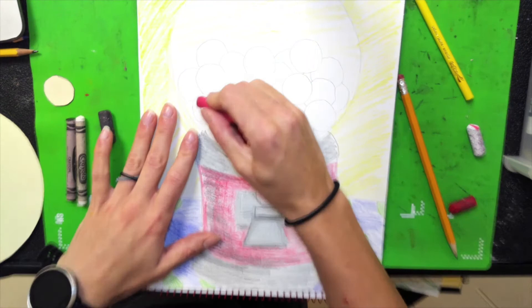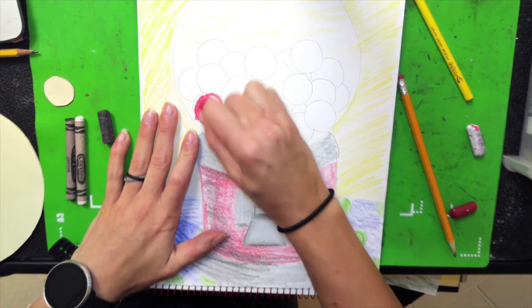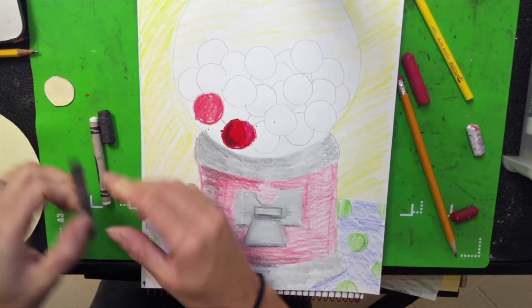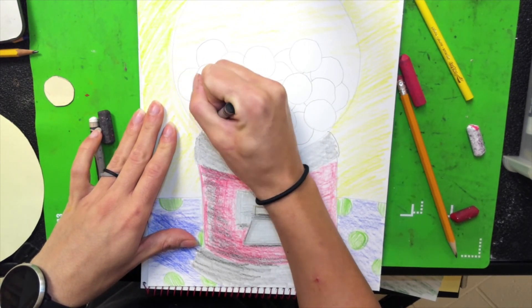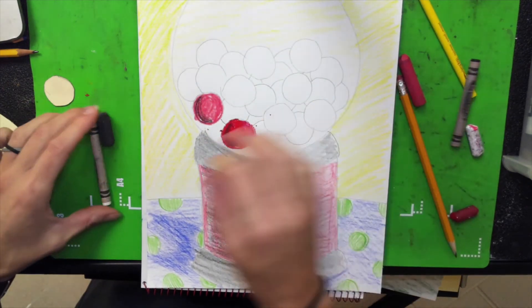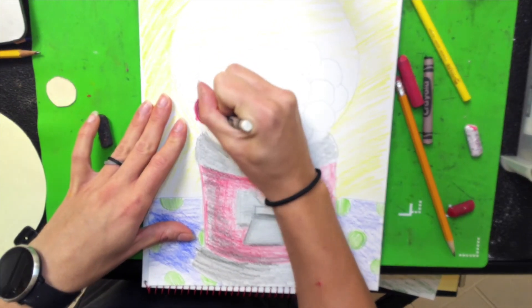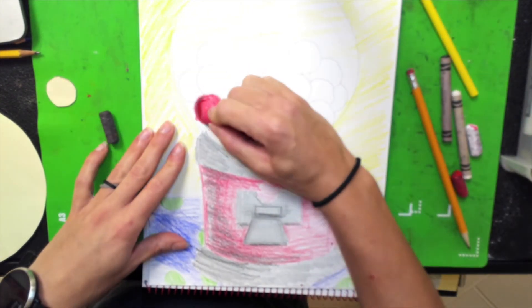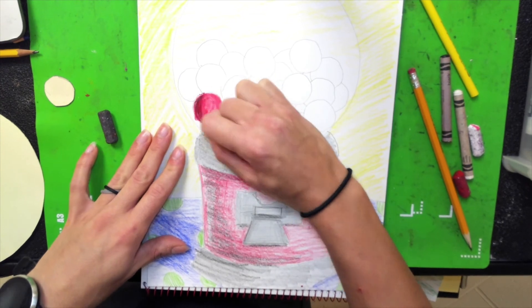If you're using crayons, same thing. Color it in. I'm going to add some black to one side, and make sure you're going with the curve of the gumball. Don't just go straight up and down, and go ahead and use white. The white doesn't show up as well, but we can still use it, and it blends it a little bit more. Now you can put the pink or whatever color you chose back on top.